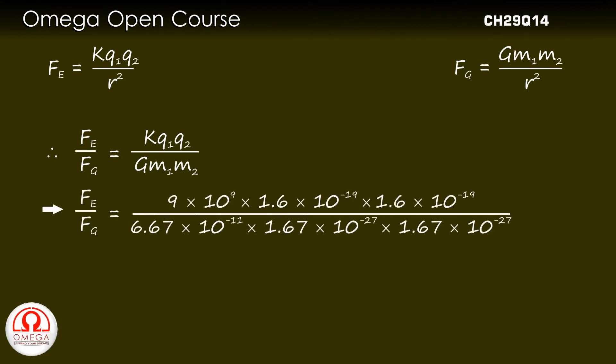Putting these values we get Fe by Fg is equal to 9 into 10 to the power 9 into 1.6 into 10 to the power minus 19 into 1.6 into 10 to the power minus 19 divided by 6.67 into 10 to the power minus 11 into 1.67 into 10 to the power minus 27 into 1.67 into 10 to the power minus 27.